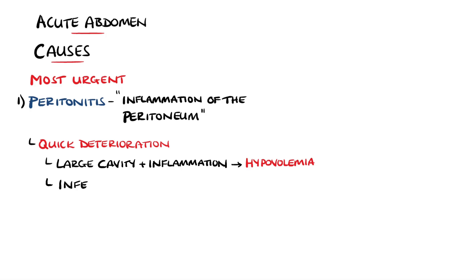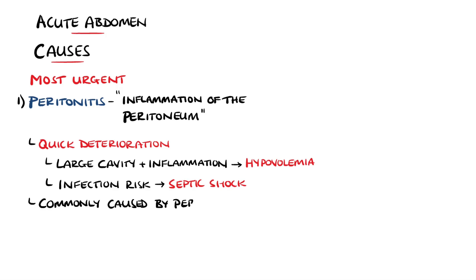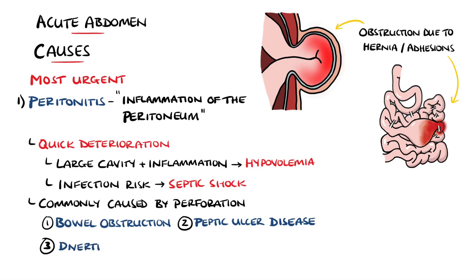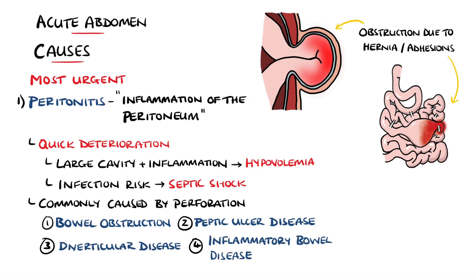Additionally, infection is extremely common, as the contents of many organs are not sterile. This generates an infective source that can quickly become septic shock. The most common cause is a perforation of one of the abdominal organs, primarily a bowel obstruction, peptic ulcer disease, diverticular disease, or inflammatory bowel disease.